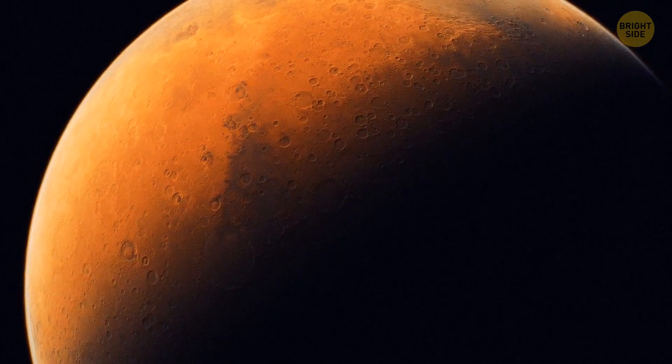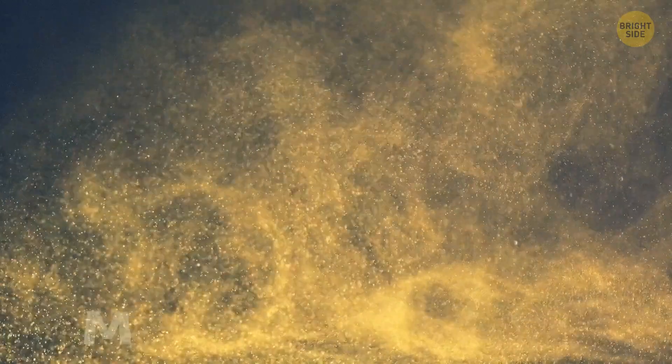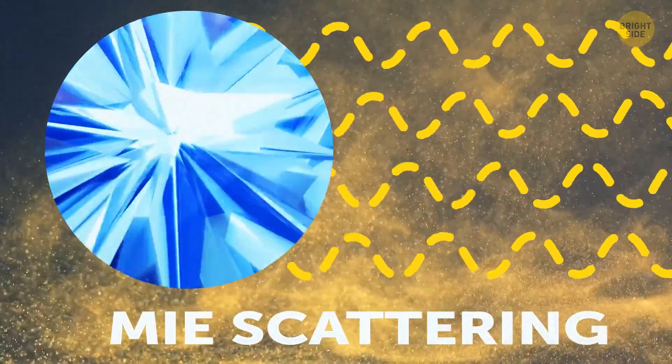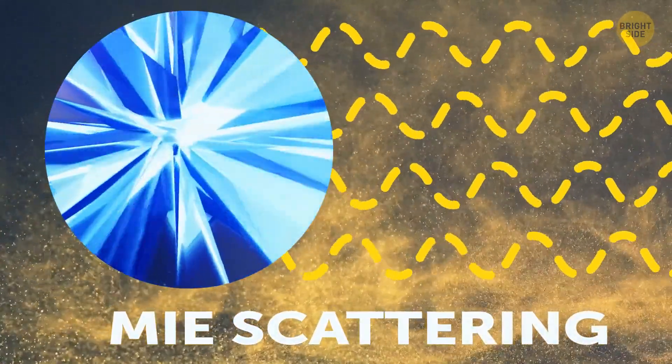They create an effect called Mie scattering. It occurs when the diameter of particles in the atmosphere is almost the same as the wavelength of the scattered light. This effect filters out the red light from the Sun's rays. So only the blue light would reach your eyes on Mars.